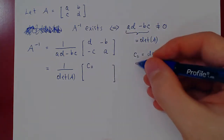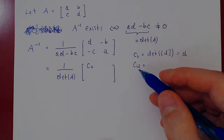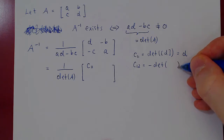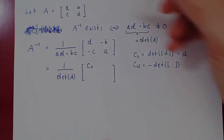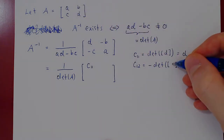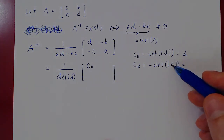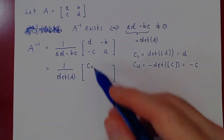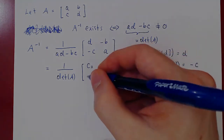Let's find C12. Negative 1 to the power 1+2 is negative 1 cubed, that's negative 1. So negative the minor M12 — the determinant obtained from A after we delete the first row, second column. If you delete the first row, second column, you're left with the entry C. The determinant of a 1 by 1 matrix is a single entry, so what we have is negative C. Negative C is C12, and for any square matrix, the cofactor C12 makes sense.